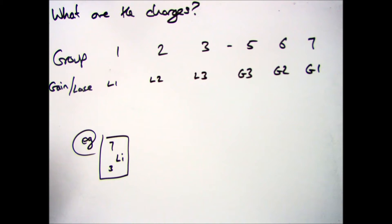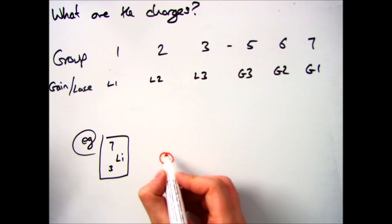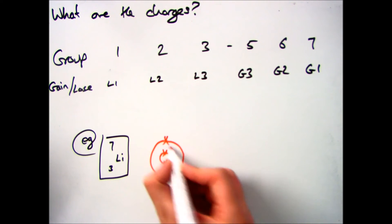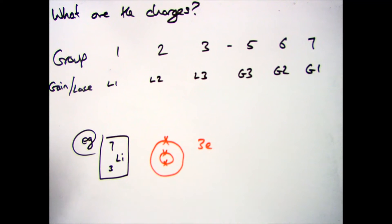So we now have how many do they want to gain or lose. How can we use that to work out the charge? So if we look at lithium as an example, which has 3 electrons and 3 protons, which you'll remember that is the bottom number on the periodic table. So we have 3 positive charges for the protons, and we have 3 negative charges for the electrons.